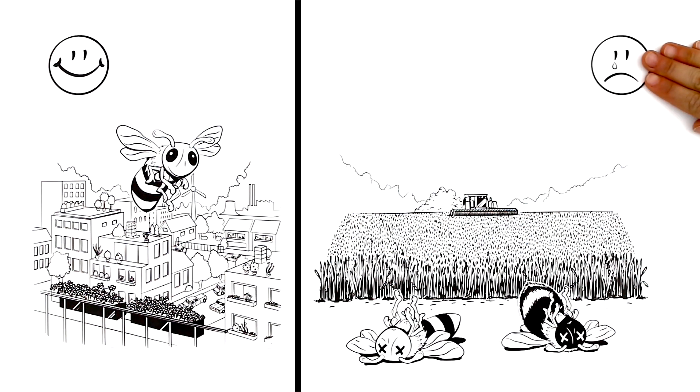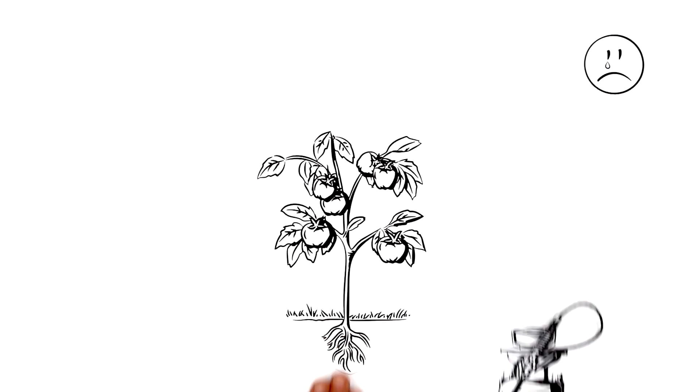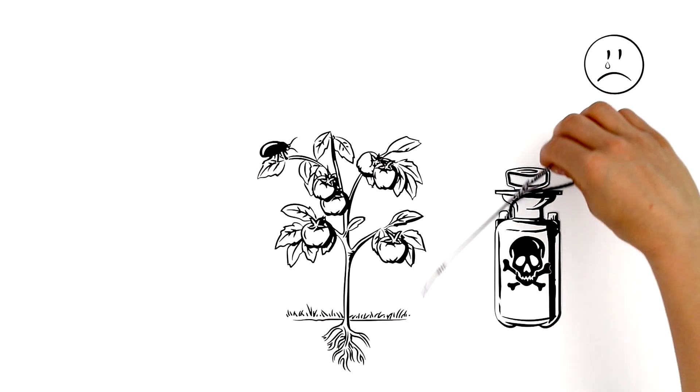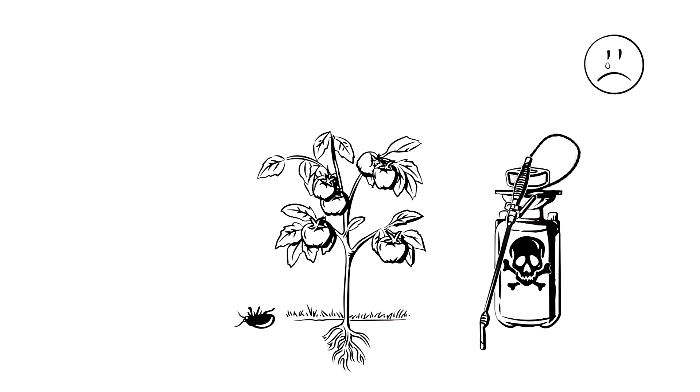Industrial agriculture uses pesticides to protect crops from unwanted insects. The insects die, but because bees are insects too, those same pesticides harm them as well, and they can also die.